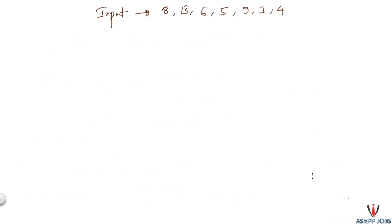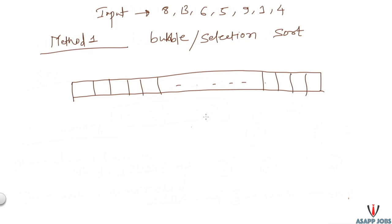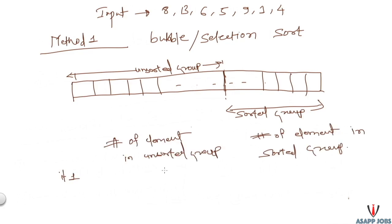We can solve this problem in many ways and we will see all these methods one by one. In the first method we use bubble and selection sort. If you observe bubble and selection sort closely, at any given point the input array is divided into two parts: an unsorted group, on which we execute our algorithm, and a sorted group. We push the maximum element of the unsorted group towards the last position of the unsorted group, and after that it joins the sorted group.